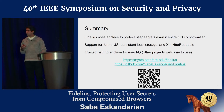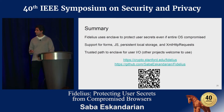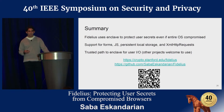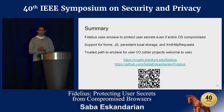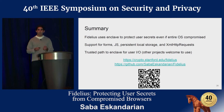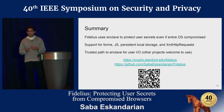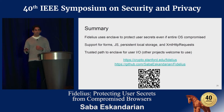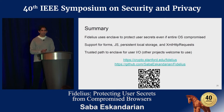To wrap up: Fidelius uses trusted hardware enclaves to protect user secrets even if the whole OS is compromised. We support JavaScript, HTML forms, local storage access, and XML HTTP requests. We have a trusted I/O path between the user and the enclave, which is actually independent of the browser component — if you just need secure I/O between a user and an enclave for any project, you can use the Fidelius trusted path on its own. Code is available on GitHub, and more information is at crypto.stanford.edu/fidelius.